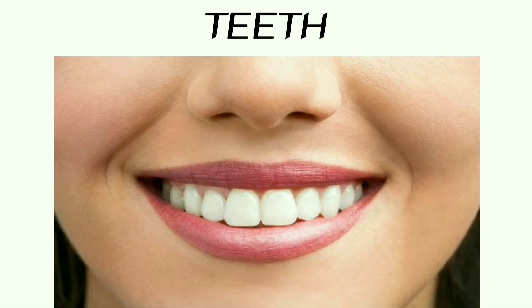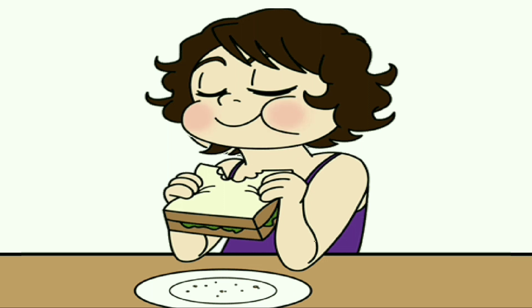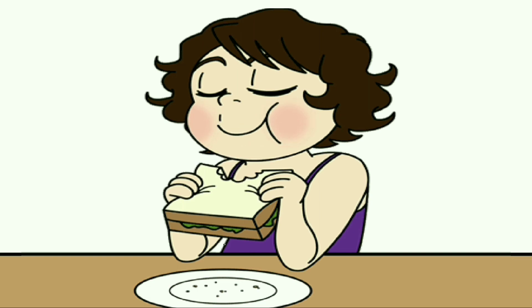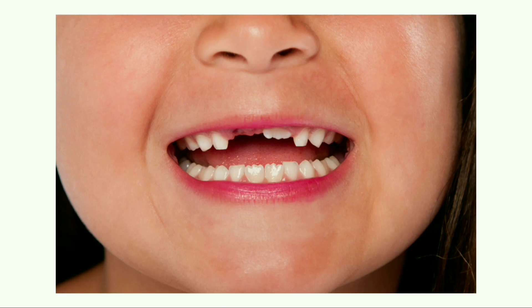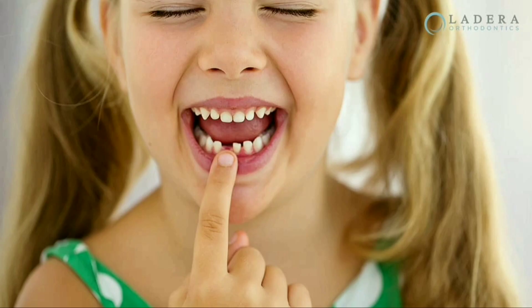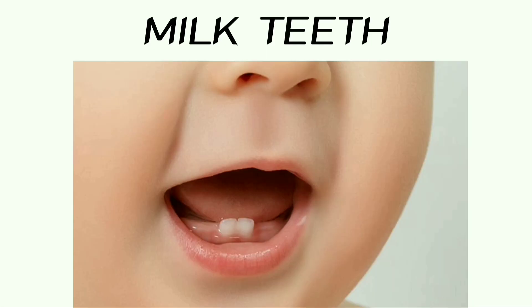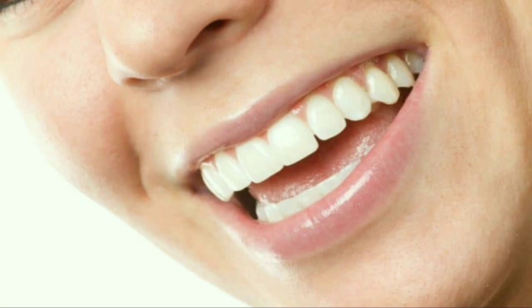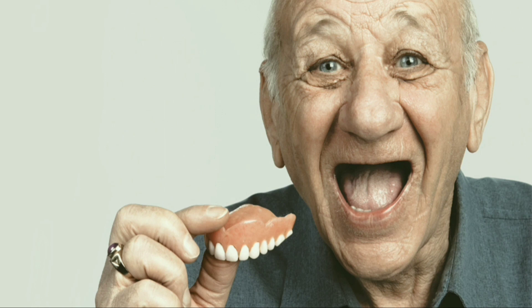We chew the food with the help of our teeth. Our teeth break the food into small pieces inside our mouth. The first set of teeth grows during infancy and they fall off at the age between 6 to 8 years. These are termed as milk teeth. The second set that replaces them are called permanent teeth, which may last throughout life or fall off during old age.